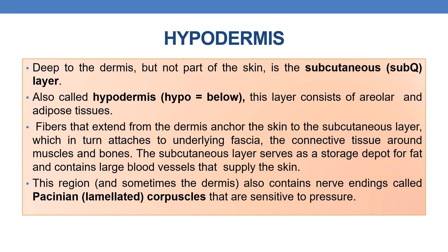Deep to the dermis, but not part of the skin, is the subcutaneous layer also called the hypodermis. This layer consists of areolar and adipose tissue. The fibers that extend from the dermis anchor the skin to the subcutaneous layer, which in turn attaches to the underlying fascia — the connective tissue around muscles and bones. The hypodermis serves as a storage depot for fat and contains large blood vessels that supply blood to the skin.